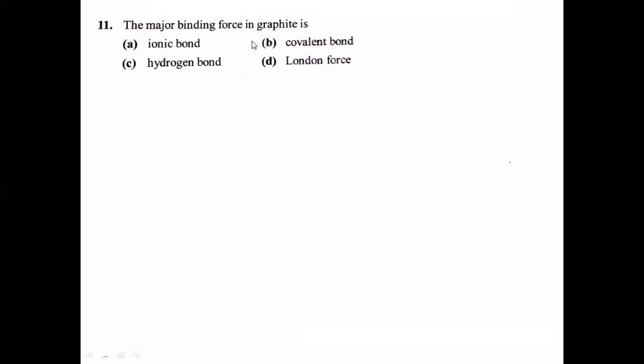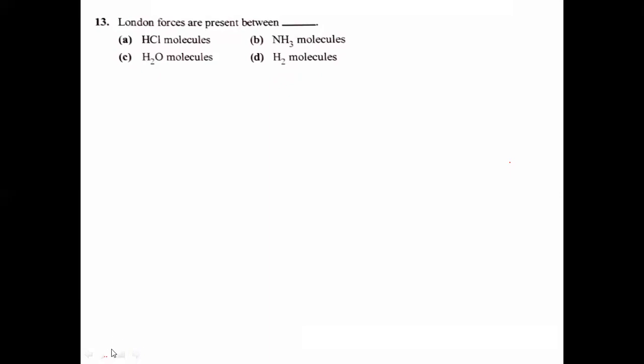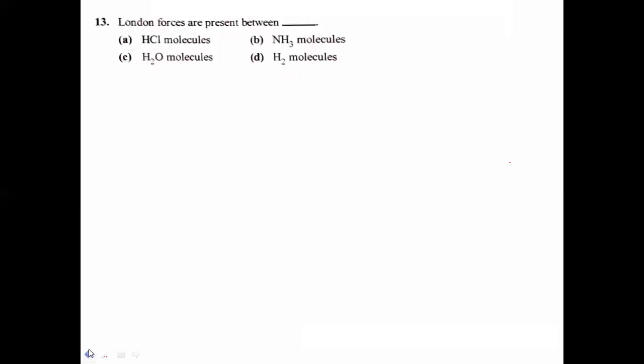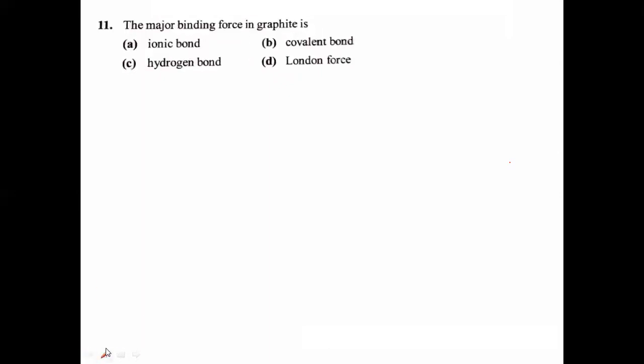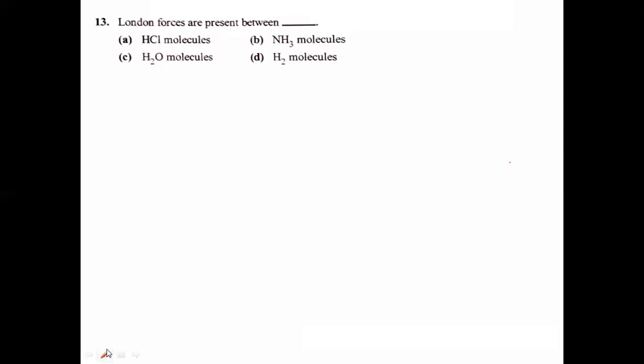The major binding force in graphite: what force is present inside graphite? It is covalent bond. Diamond and graphite are examples of covalent solids, so there is a presence of covalent bond in graphite.